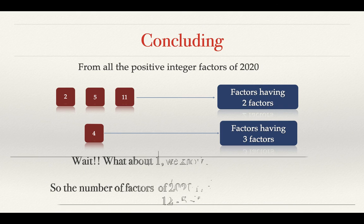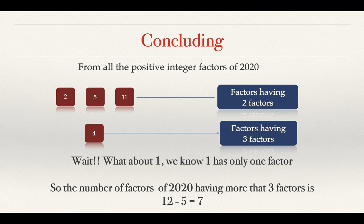No. What about 1? We know that 1 has only 1 factor. So all these 5 numbers will be excluded from the solution set because they have factors less than or equal to 3. So the number of factors of 2020 having more than 3 factors is 12 minus 5, which is 7. And we are done quite easily.